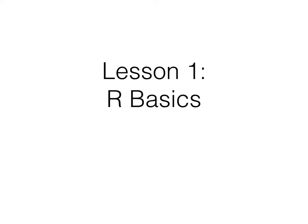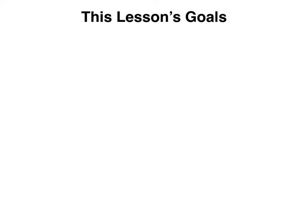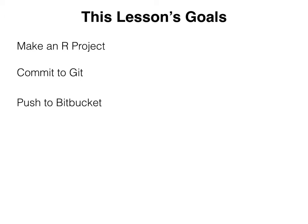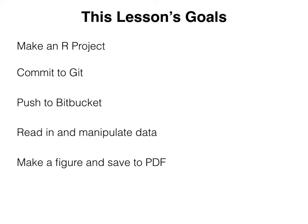Hello, welcome to the official lesson one in the course R for Publication. Today we'll be talking about how to do some basic things in R and RStudio. Our goals for today include making an R project, committing to Git and pushing up to Bitbucket, reading in and manipulating data, making a figure and saving it to a PDF, and creating an R Markdown document to summarize all the work we did today.